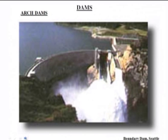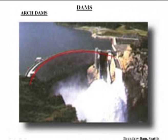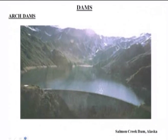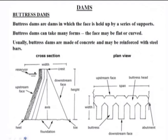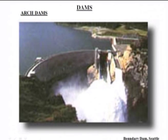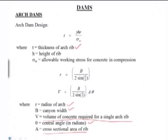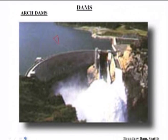An example of an arch dam is the Boundary Dam in Seattle, US. Looking at the photographic picture, note the arch shape and the small thickness of the material used compared to other dam types. The upstream site and downstream site are visible from the photographs, though clarity is limited — clearer pictures will be shown next class.